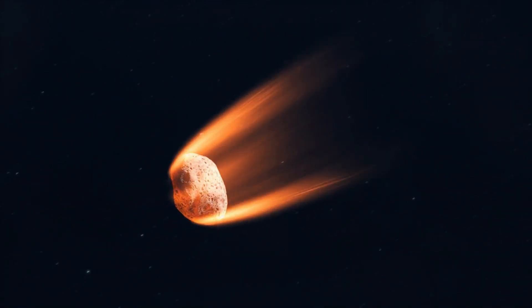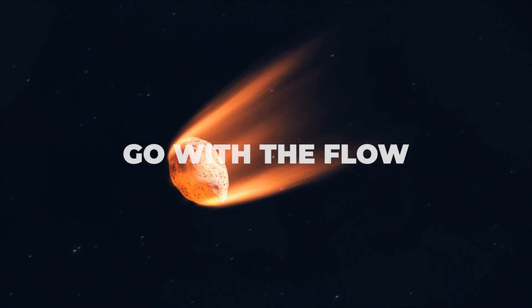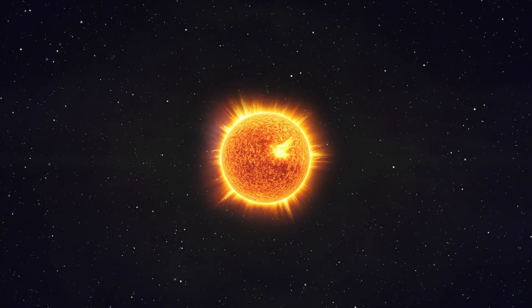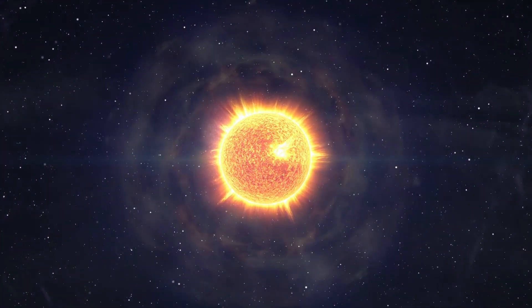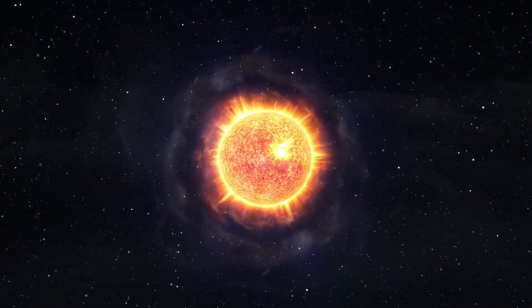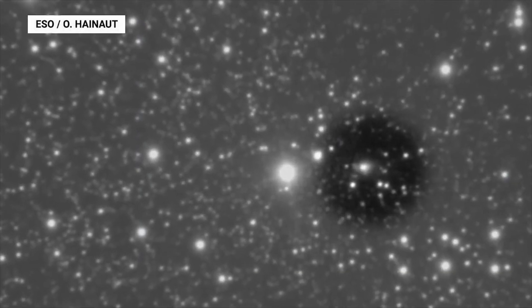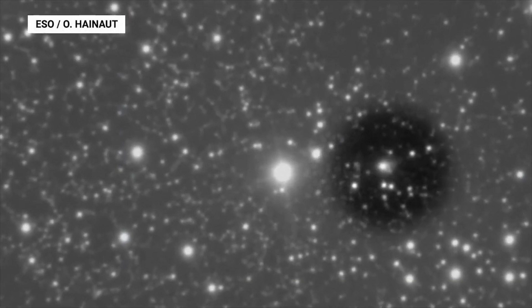To understand why this dust cloud is so suspicious, you have to look at the behavior of the tail. In nature, things go with the flow. If you throw a leaf into a river, it drifts downstream. In our solar system, the river is the solar wind—a stream of particles screaming out from the sun. Comets always point away from the wind. It's basic physics.